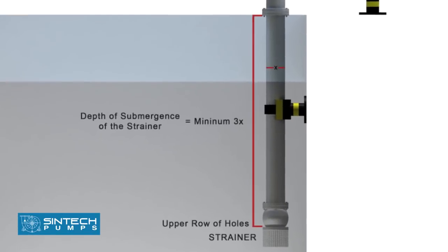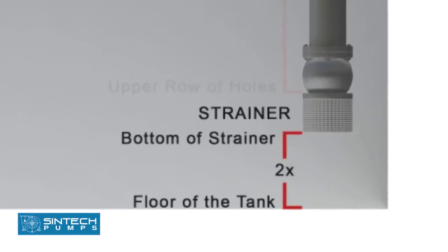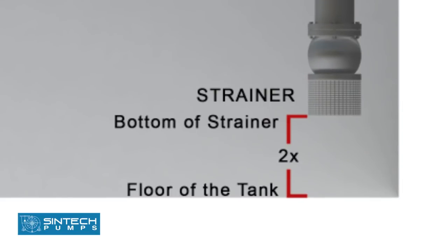The minimum depth of submergence of the strainer should be at least 3 times the pipe diameter measured from upper row of holes of strainer. The distance between the bottom of strainer and the floor of the tank should be considered as 2 times the pipe diameter.